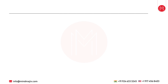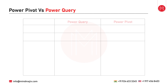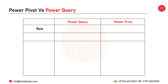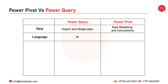Now, coming to the main point of this video: what is the critical difference between Power Pivot and Power Query? Looking at the comparison points — in terms of role, the main role of Power Query is importing and shaping data, which is essentially the ETL operations. The main role of Power Pivot is to model the data and perform complicated calculations. In terms of language, Power Query uses the M language (Mashup language), while Power Pivot uses the DAX language.